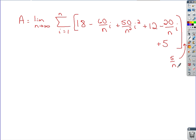Be nice to clean up the inside here a little bit before we distribute that 5 over n. So collecting like terms, you've got 18, 12, 5, so that would be 35. You've got a couple of i terms, a negative 60 over n i and negative 20 over n i, so that would be negative 80 over n i. And then we just have that 50 over n squared i squared term.